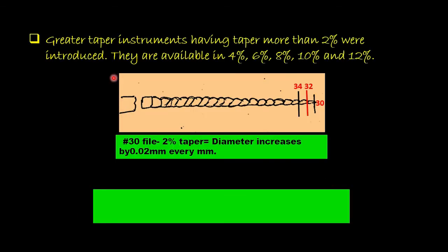Greater taper instruments that have a taper more than 2% were introduced, and they are available in 4%, 6%, 8%, 10%, and 12%. If we have a file that has a taper of about 2%, it means diameter increases by 0.02 mm per millimeter.